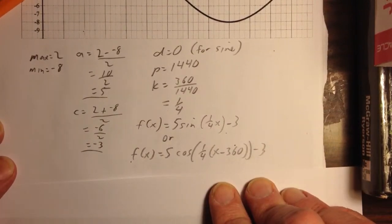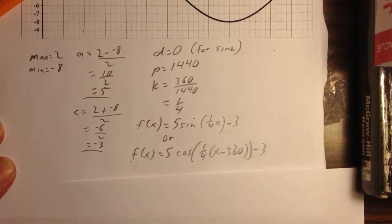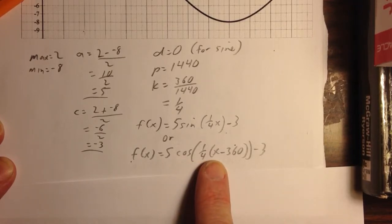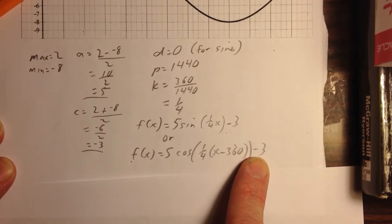So my phase shift will be 360 to the right, which works out to be 5 cosine 1 quarter times quantity x minus 360 minus 3.